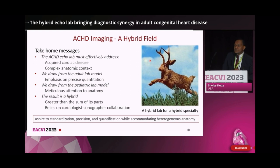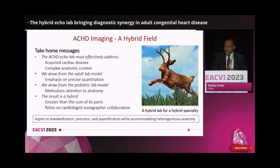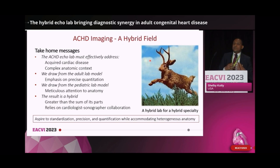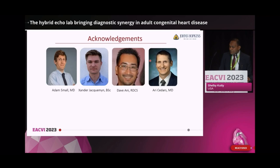So what are our take-home messages? The ACHD echo lab must effectively address both the acquired heart disease that adults get and the complex anatomic context in which this takes place. We draw both from the adult lab model with its emphasis on precise functional quantitation and the pediatric lab model with its meticulous attention to anatomy. The result is a hybrid which is greater than the sum of its parts and relies on a high degree of cardiology-sonography interaction and collaboration. In conclusion, a hybrid specialty as unique as ACHD deserves a hybrid lab to support it. We aspire to standardization, precision, and quantification while accommodating heterogeneous anatomy. I'd like to acknowledge my colleagues who helped with this talk, and thank you for your attention.